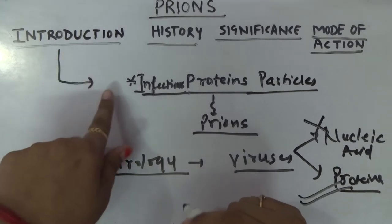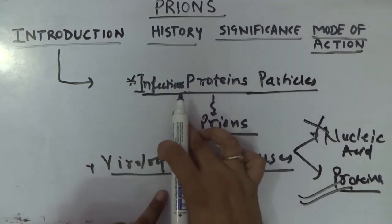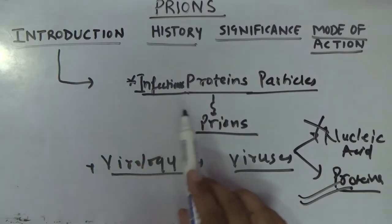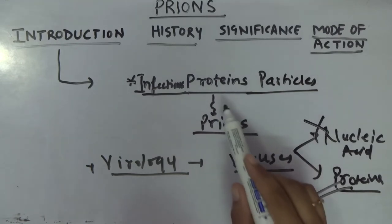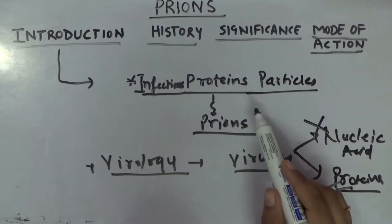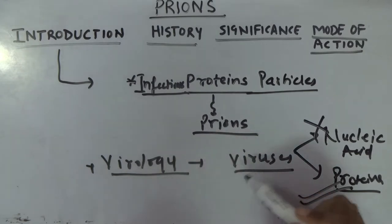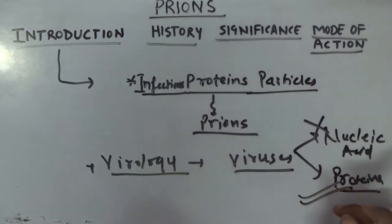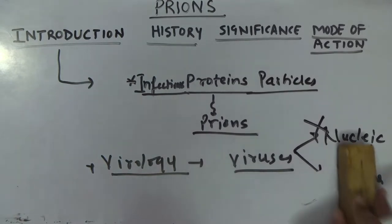To quickly revise: prions are proteins, but they are not normal proteins — they are infectious proteins which are able to cause various kinds of diseases. They are studied under virology because their biochemistry resembles viruses with regard to their proteinaceous nature. That was the brief introduction about prions.